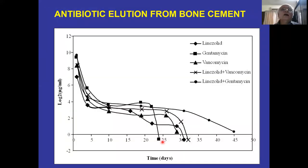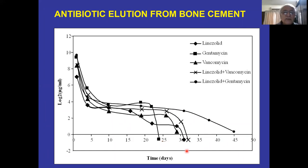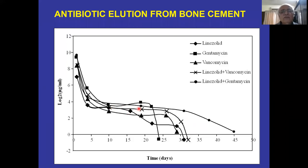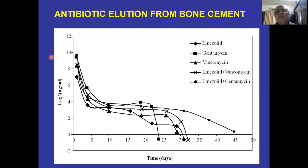Regarding antibiotic elution: gentamicin has the maximum elution from cement. It is only about three weeks maximum; after that it drops down. It starts at the MIC value and drops gradually — after three weeks there is nothing, the antibiotic does not usually work. The antibiotic spacer stops antibiotic elution after that period. Don't be under the impression that once you put antibiotic it will work for three months — it becomes a normal implant after that.